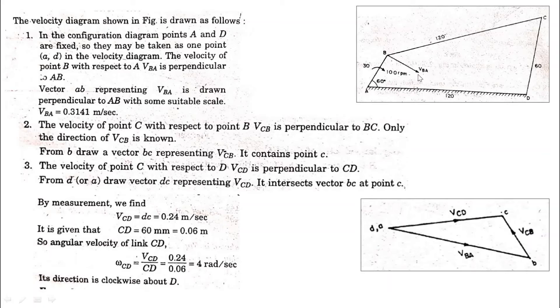Then we draw vba to a suitable scale. We draw a horizontal line here at that angle, and assume a scale that 1 cm is equal to so much of meter per second, and at that scale we draw the length.